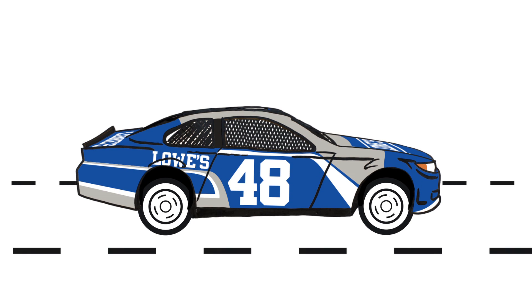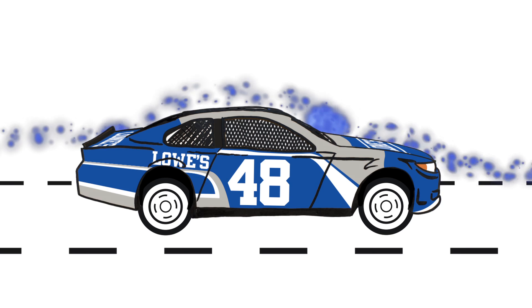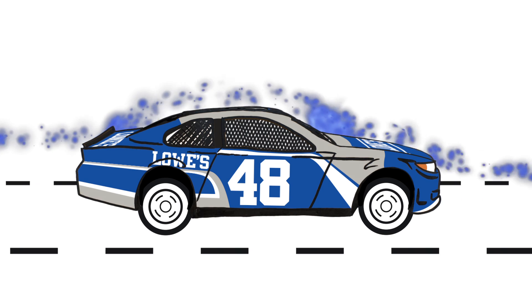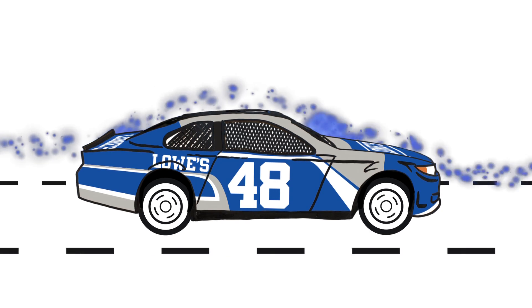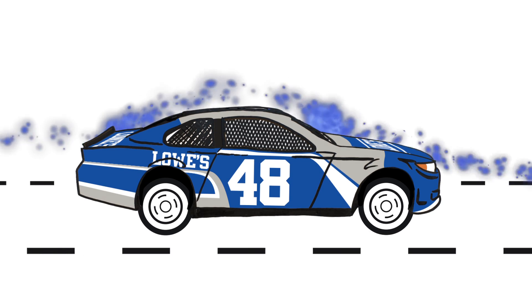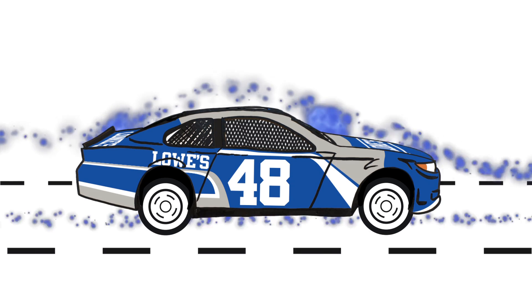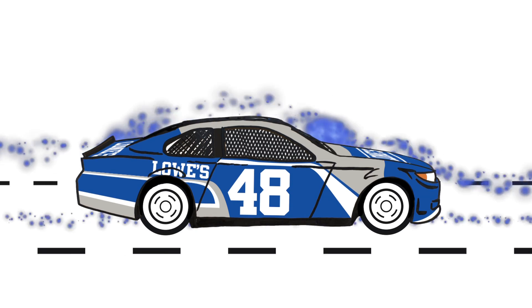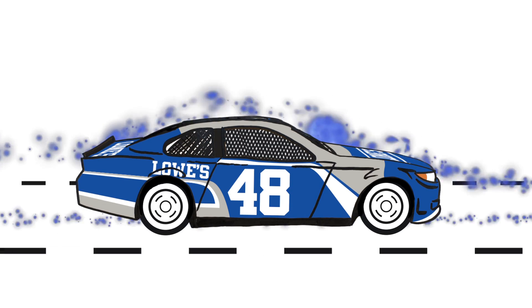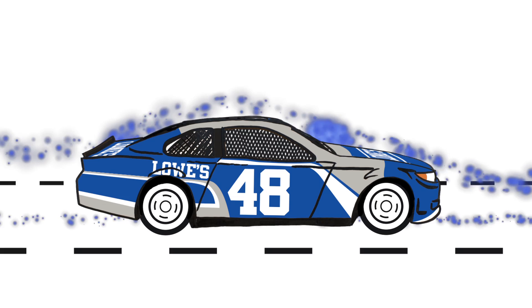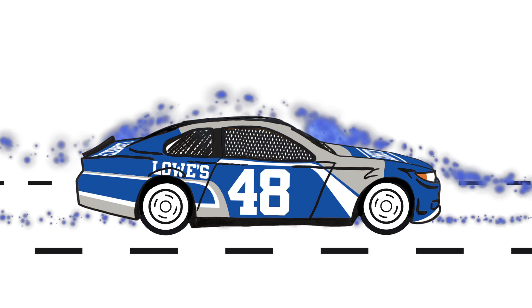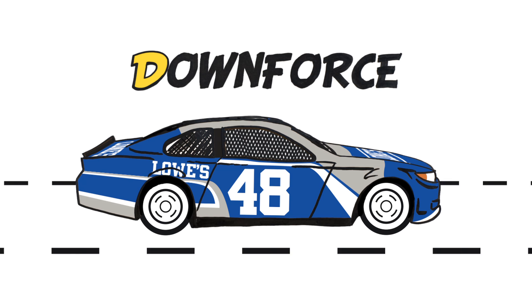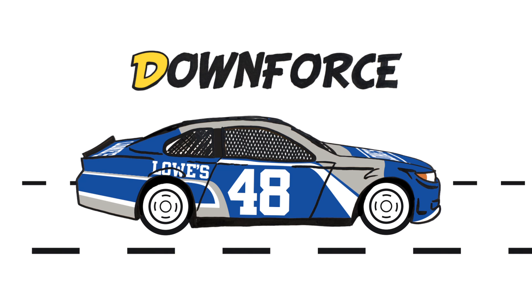As a car passes through the air the molecules above the car are slowed down at certain points, which creates an area of high pressure pushing the car down. The air under the car is not slowed down, which creates an area of low pressure. This has the effect of sucking the car down into the racetrack. The combination of these high and low pressure areas above and below the car creates downforce, and as a result the car has more grip.